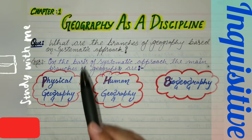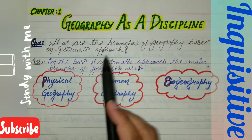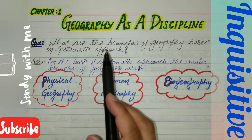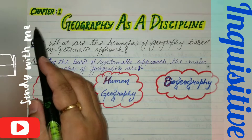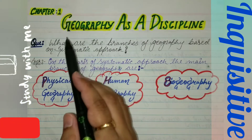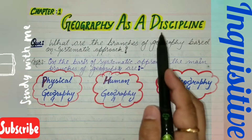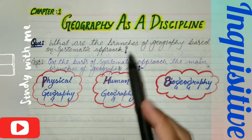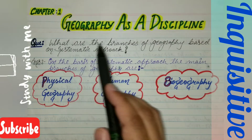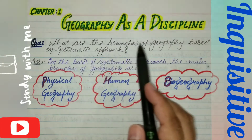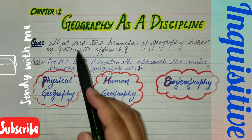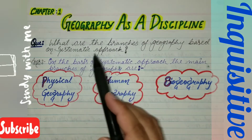Welcome back to all of you. In this video you will be learning one of the most important topics of Chapter 1 of your 11th class geography — that is, geography as a discipline. Today's topic is: what are the main branches of geography based on systematic approaches?